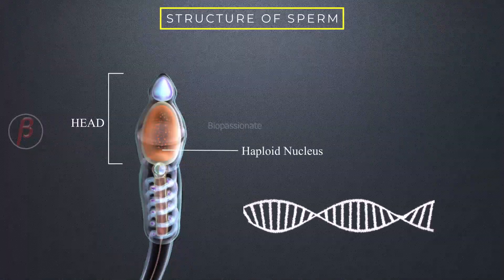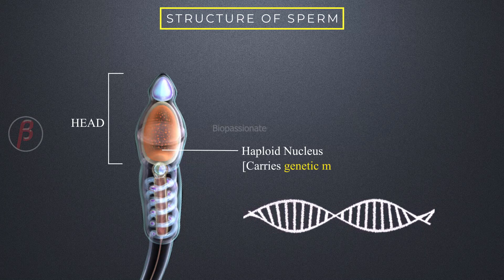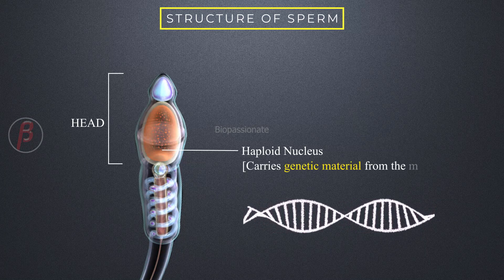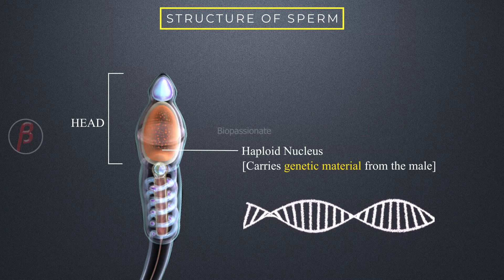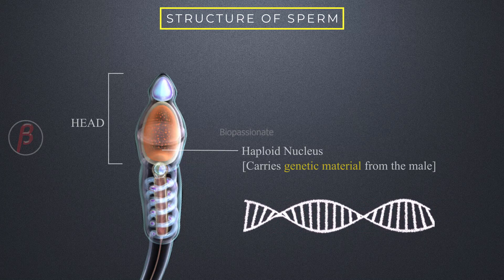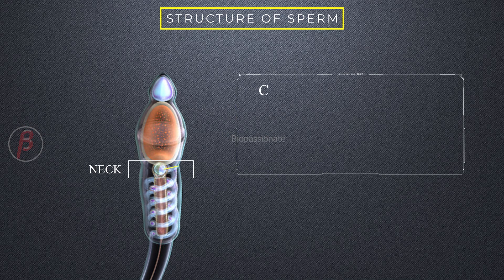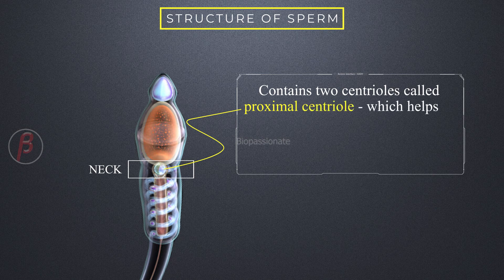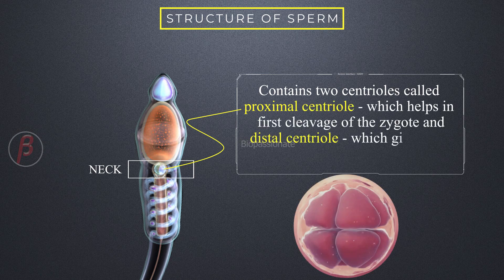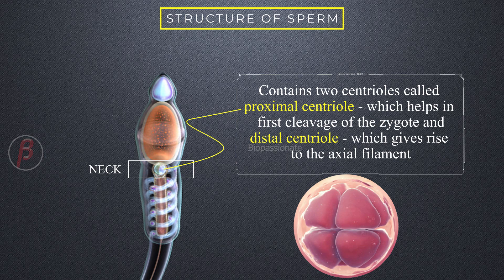The nucleus is haploid and carries genetic information from the male parent. The neck region is short and contains two centrioles called the proximal centriole and distal centriole. The proximal centriole helps in the first cleavage of the zygote, while the distal centriole gives rise to the axial filament.